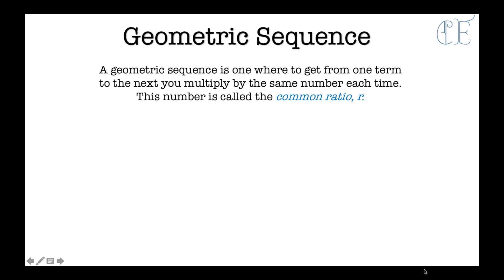Let's look at geometric sequences. A geometric sequence is one where to get from one term to the next, you multiply by the same number each time. This number is called the common ratio, r.